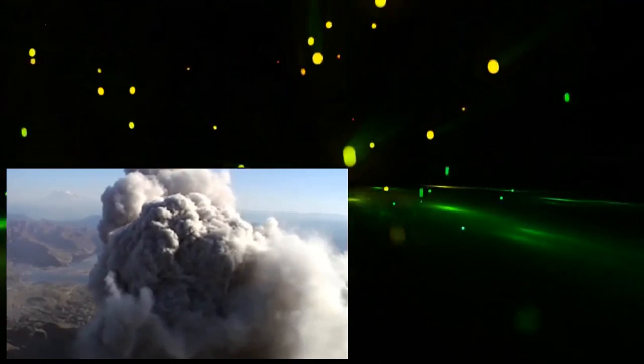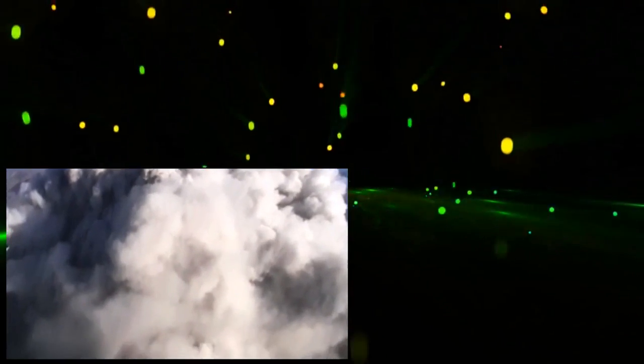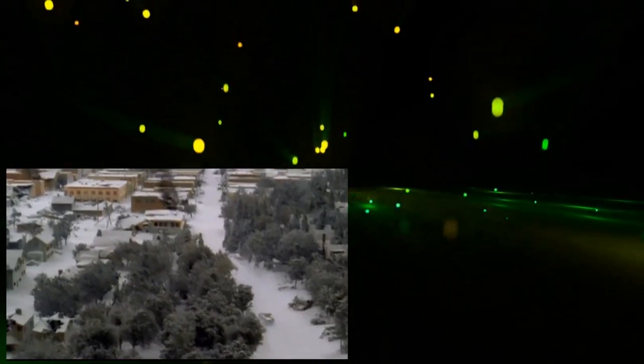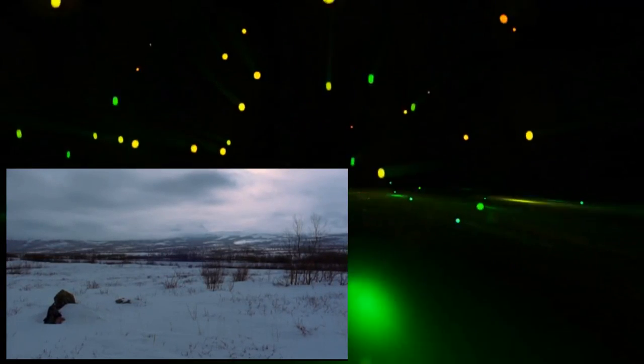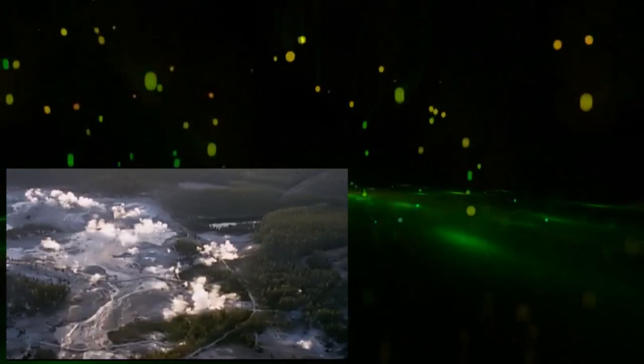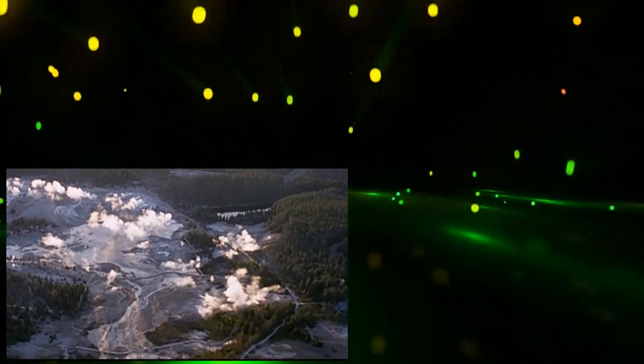High in the atmosphere, the ash cloud would surround the planet, sending temperatures plunging. Global agriculture would fall into chaos. How do we know it will happen? Because it's happened before.